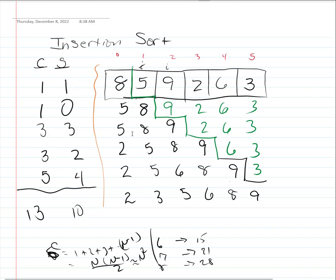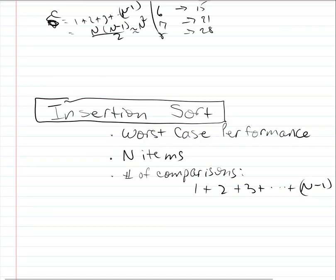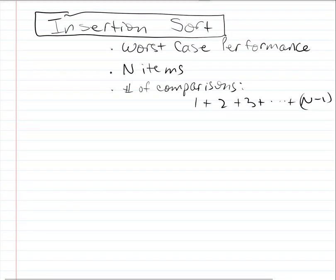In the worst case scenario, the number of comparisons goes up in a very particular way. If you have n items, there's one comparison initially in that first step, then two comparisons, then three, then four, then possibly five — it increments up predictably. So if we have n items, we'll have one plus two plus three, all the way up to n minus one comparisons.